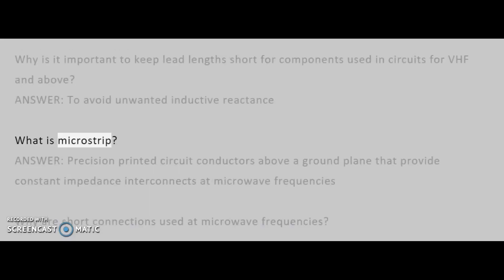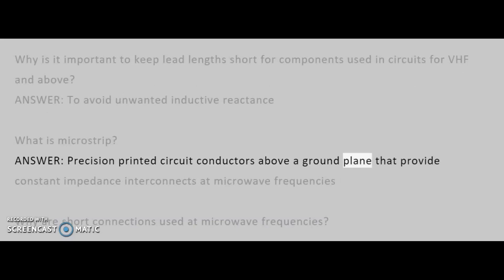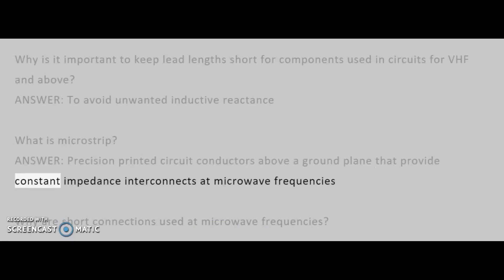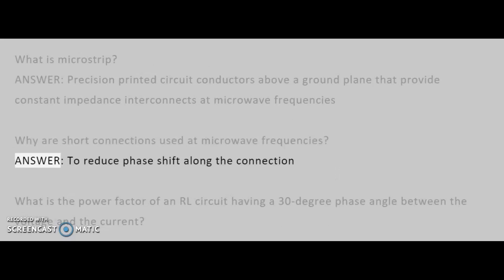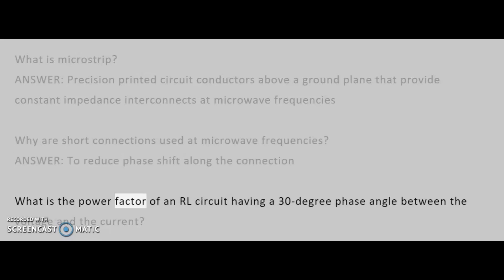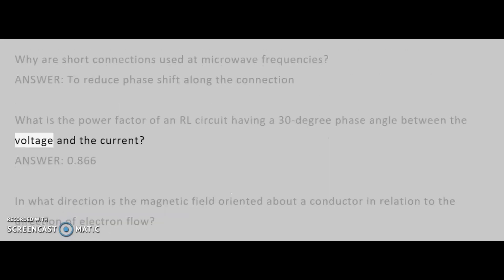What is microstrip? Answer: Precision printed circuit conductors above a ground plane that provide constant impedance interconnects at microwave frequencies. Why are short connections used at microwave frequencies? Answer: To reduce phase shift along the connection. What is the power factor of an RL circuit having a 30 degree phase angle between the voltage and the current? Answer: 0.866.